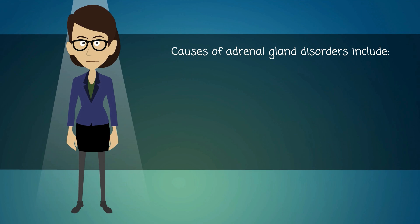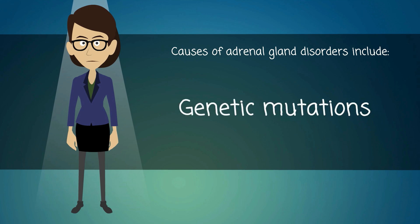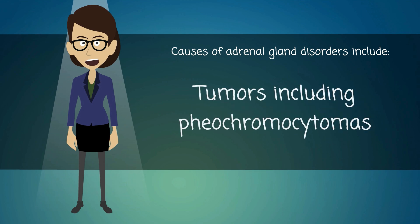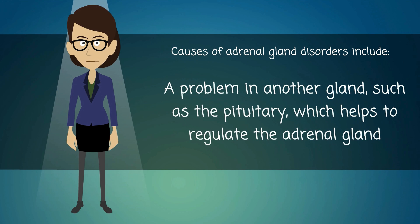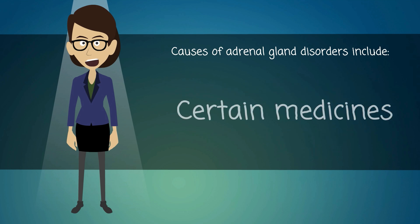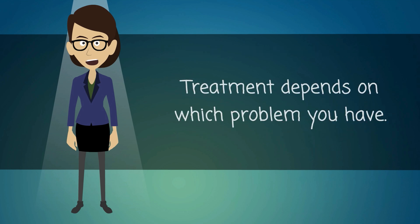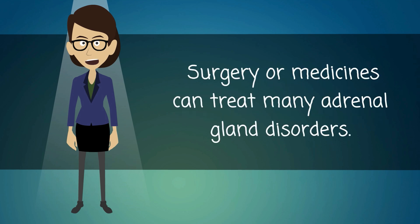Causes of adrenal gland disorders include genetic mutations, tumors including pheochromocytoma tumors, infections, a problem in another gland such as the pituitary — which helps to regulate the adrenal gland — and certain medicines. Treatment depends on which problem you have. Surgery or medicines can treat many adrenal gland disorders.